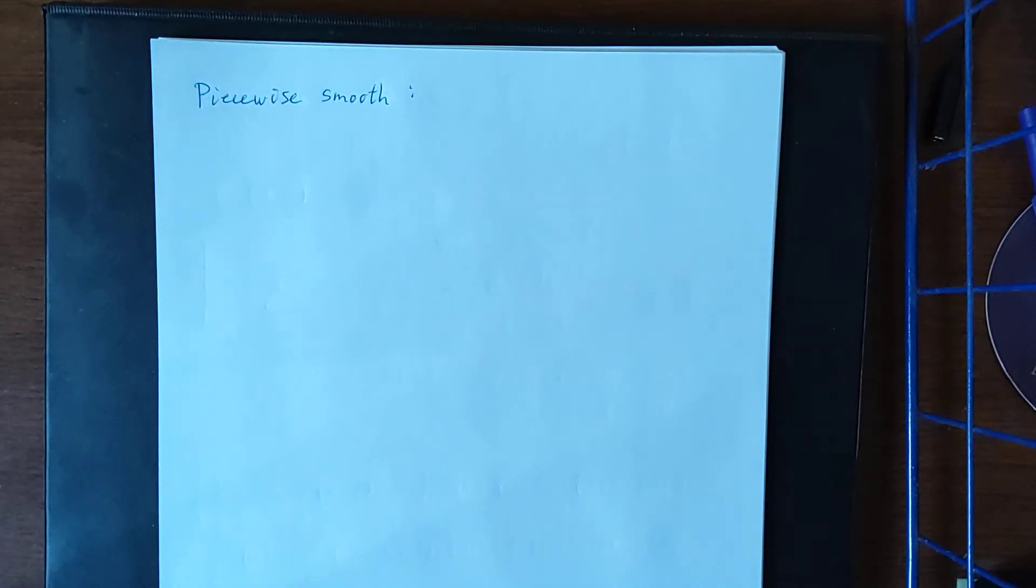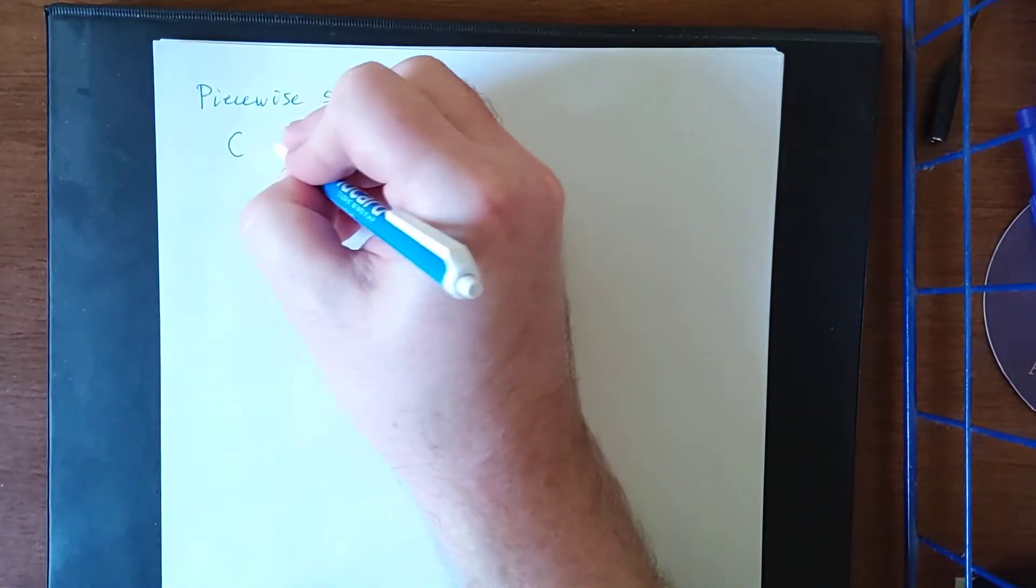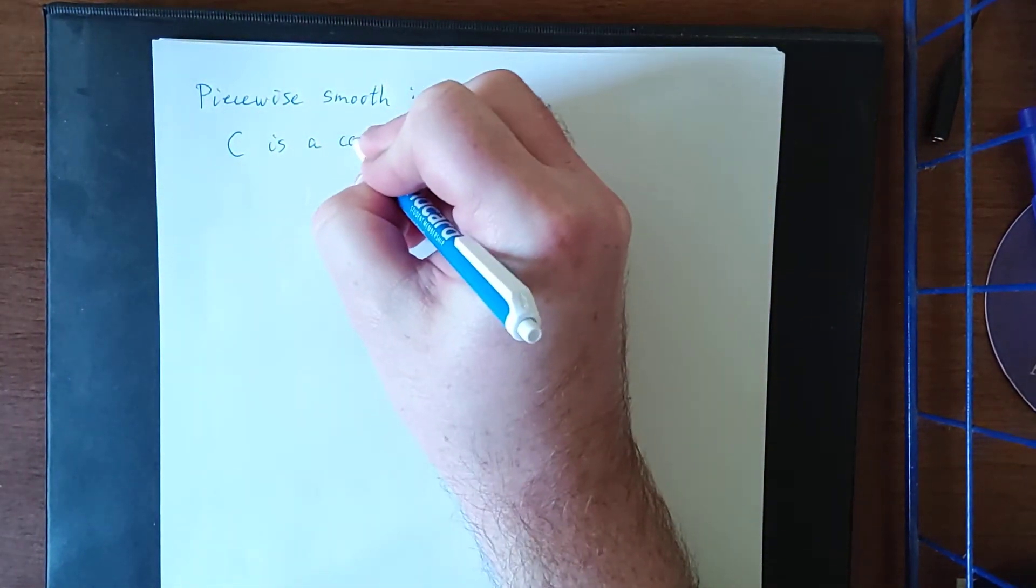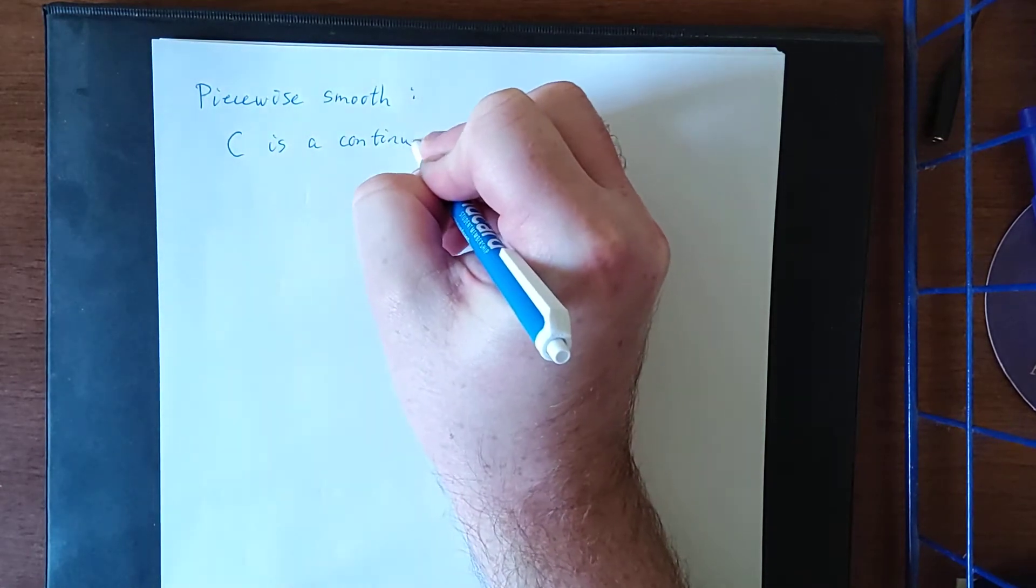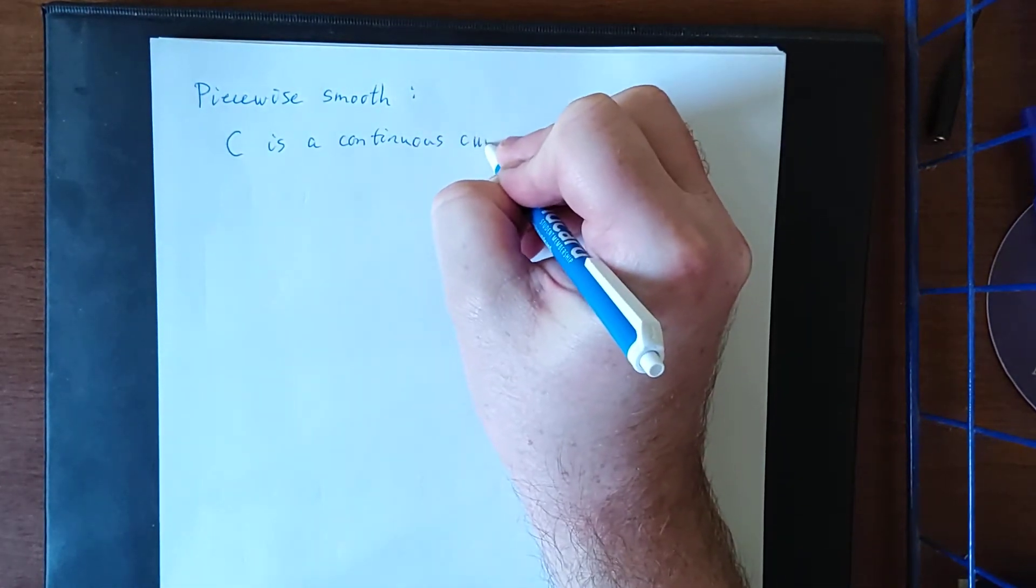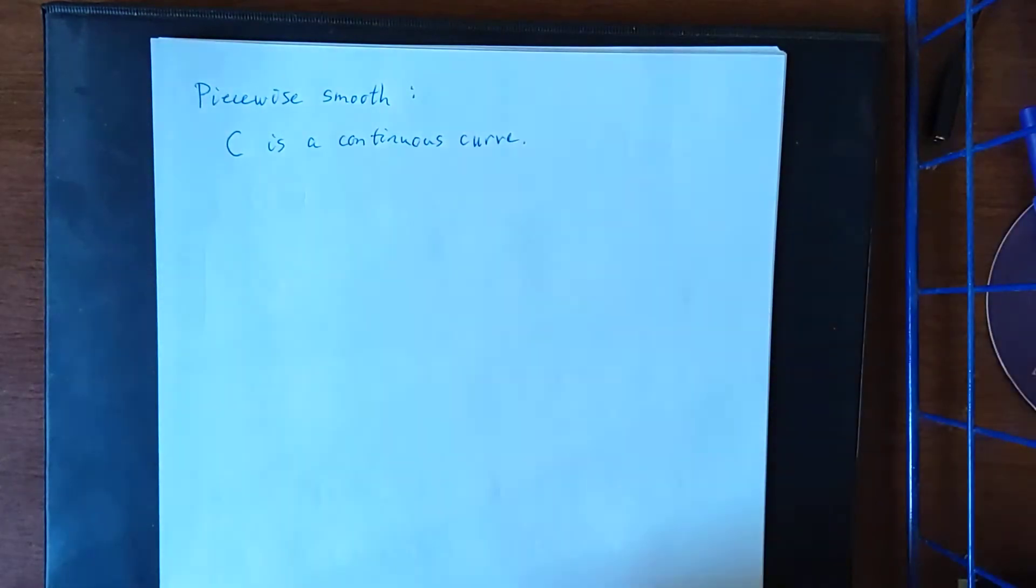In this video we're going to define what it means to be piecewise smooth. So suppose that C is a continuous curve. That is, C can be created without ever lifting your writing utensil.